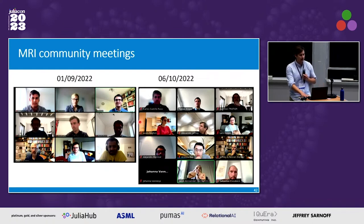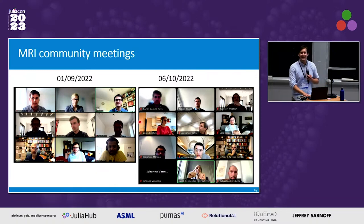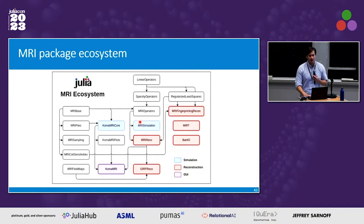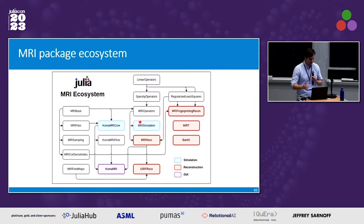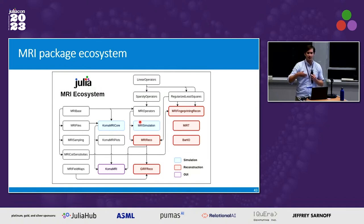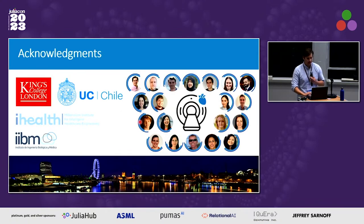The MRI community is taking notice of Julia. A lot of people are having meetings, porting reconstruction and simulation code to Julia, and it's starting to form an MRI ecosystem. This has huge implications for reconstruction speed: if reconstruction takes five minutes you can't repeat a scan, but if you can see the result in 30 seconds you can reacquire or adjust. So this has a major impact in the clinic as well. I wanted to acknowledge my colleagues at King's College London and in Chile. Thank you everyone for listening.